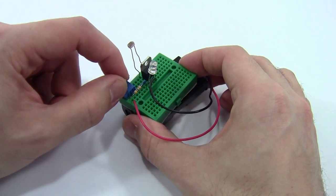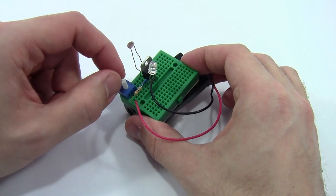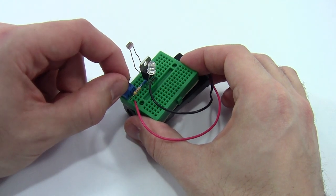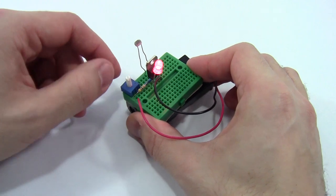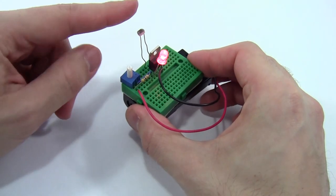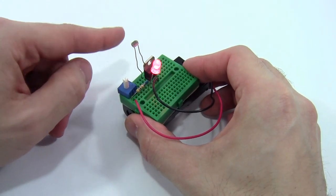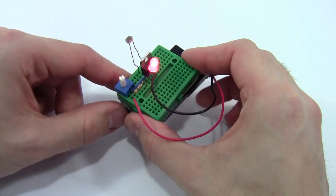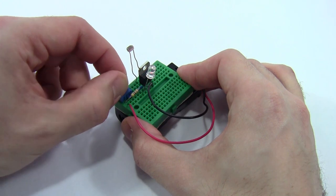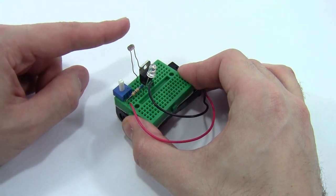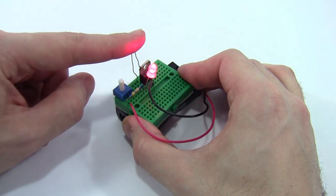I can adjust this by turning the potentiometer. Right now I have it turned all the way in one direction. I'm going to turn it all the way in the other direction, and now you can see my LED is always on even though it's really bright in the room. There's no change when I switch from dark to light, so I don't want that either. So what I want to do is find some nice middle ground where my LED is off when it's bright and then it turns on when it gets dark.